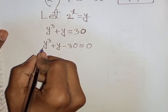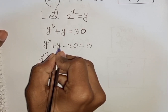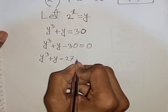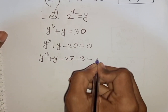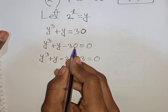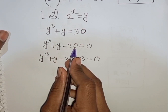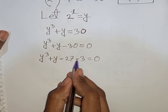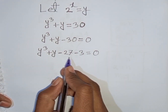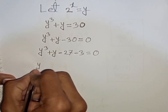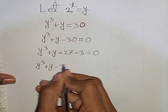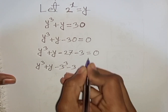Now y³ + y - 30 can be written as y³ + y - 27 - 3 = 0. To understand this: the nearest cubic number to 30 is 27, so minus 30 can be written as minus 27 minus 3. So we have y³ minus 3³ plus y minus 3 equals 0.